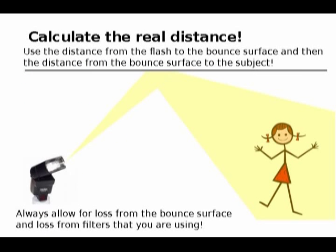Another very important concept to keep firmly embedded in your mind is, when you're doing bounce flash photography — when you're bouncing off the ceiling or something of that nature — the distance to the subject is not the distance from the flash to the subject directly. It's the distance from the bounce surface to the subject. So you measure from the flash to the surface, like the ceiling, and then from the ceiling to the subject. That would be your flash-to-subject distance.